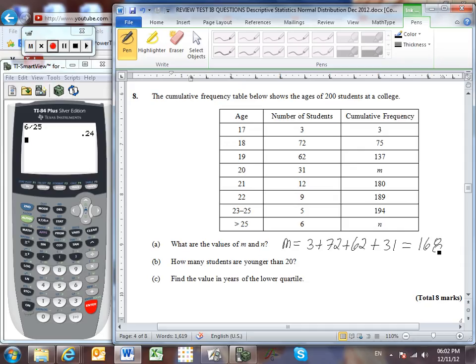How many students are younger than 20? Well here are students that are younger than 20. Let's add those three numbers of students together. 3 plus 72 plus 62. Or of course we could just read off this value right here. This is the total accumulated number of students who are less than 20. 17, 18, and 19 added together. Either way, you get 137.